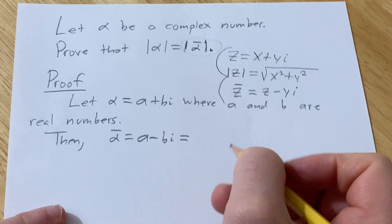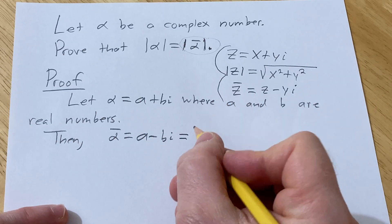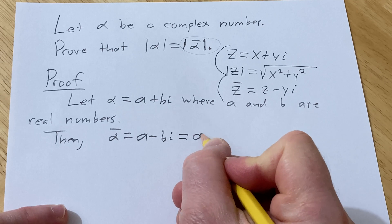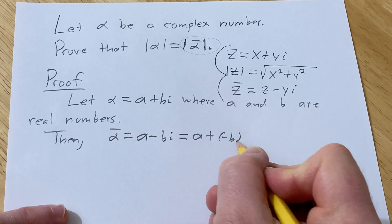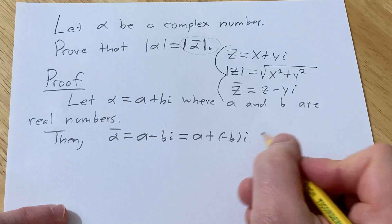I'm going to write it a different way, because I think in a proof like this, sometimes confusion occurs. You can write this as a plus negative b times i.